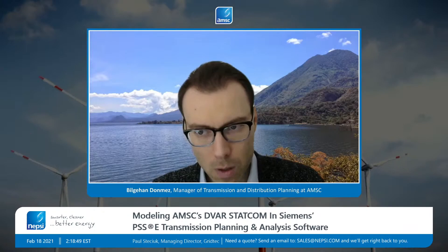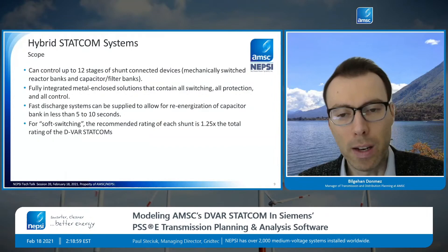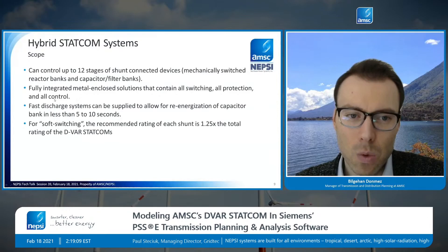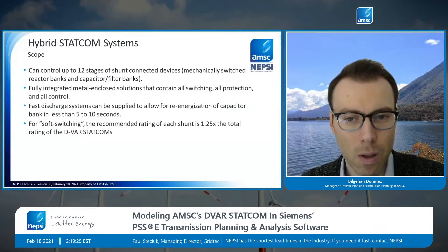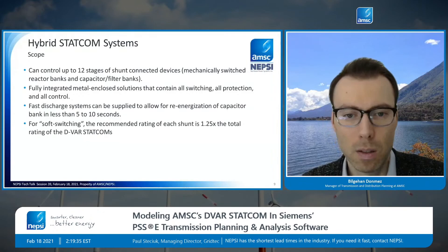There's a gray area in the definition of dynamic capability. When you switch in a capacitor and want to switch it back in, how quickly can you use capacitors for repeated applications? That's where fast discharge systems come into play. For re-energization of capacitor banks using fast discharge systems, it can be done in 5 to 10 seconds. Otherwise, without the fast discharge system, it can take a few minutes before you can re-utilize a capacitor.